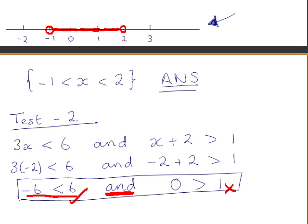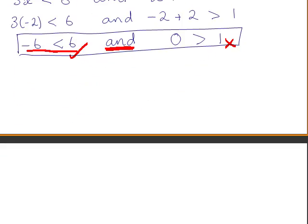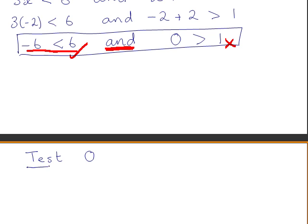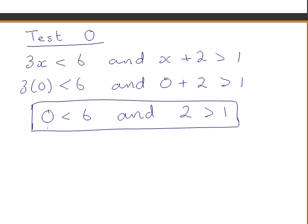We check a value that should be part of the solution set: x = 0, which is a real number between −1 and 2. Filling in 0: 0 < 6 (true) and 2 > 1 (true). Because both statements are satisfied, and the word 'and' requires both to be true, zero is indeed part of the solution set as we found.